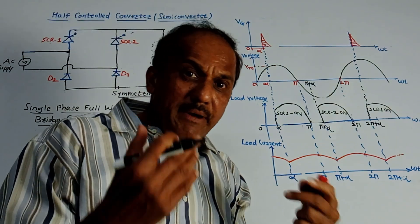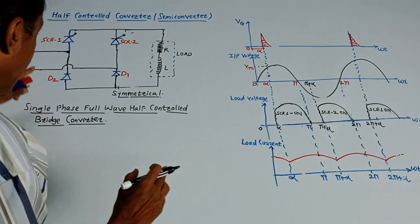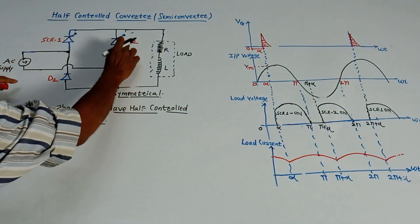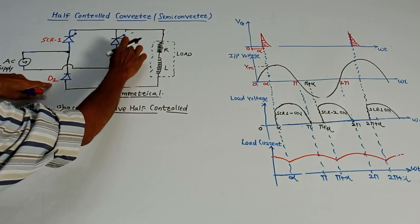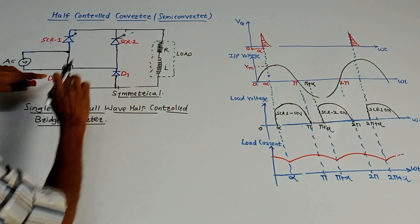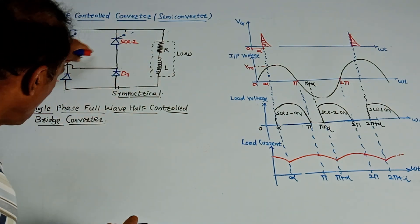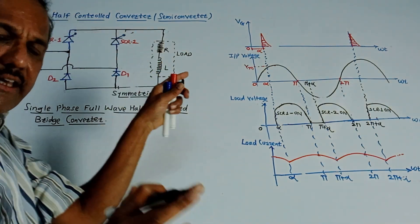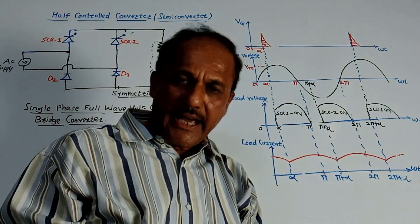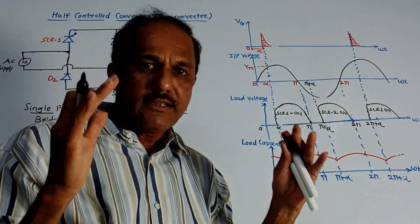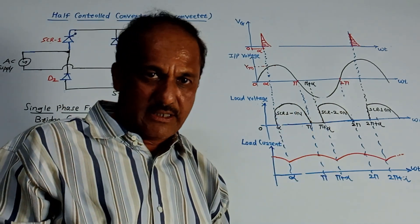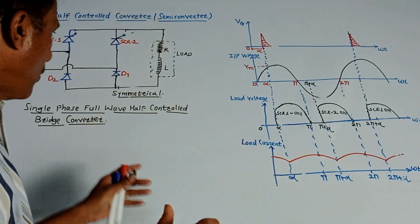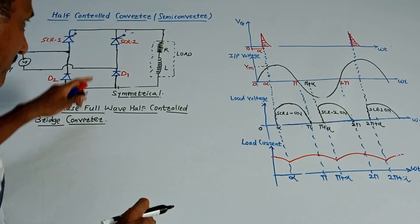There is one more variation, which is called asymmetrical. In the case of asymmetrical configuration, D2 and SCR2 interchange positions — SCR2 will be placed where D2 was. That will be the circuit diagram for the asymmetrical semi-converter. Waveforms and all other explanations remain the same; only there is a difference in the circuit diagram.